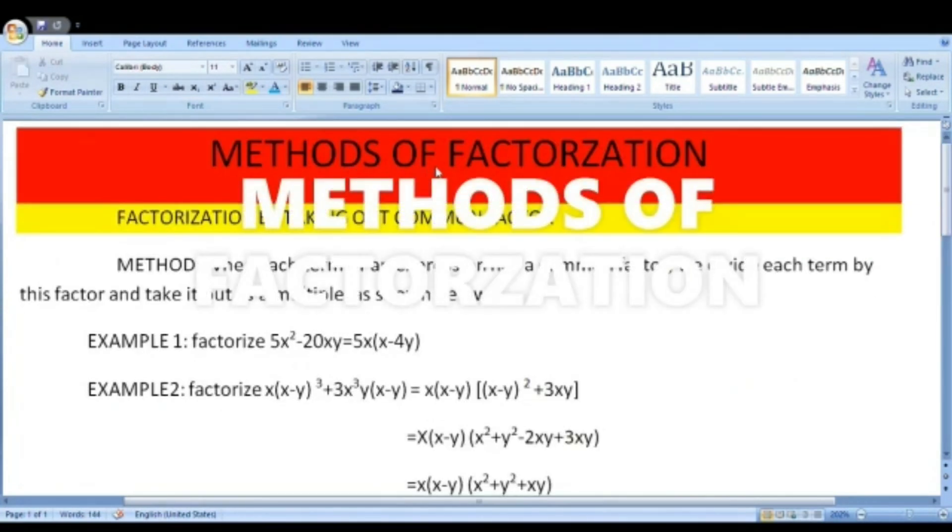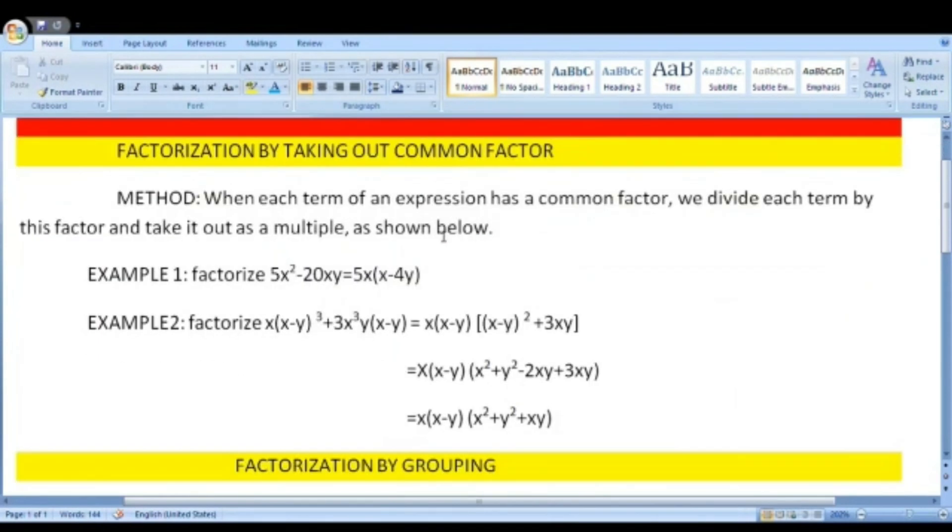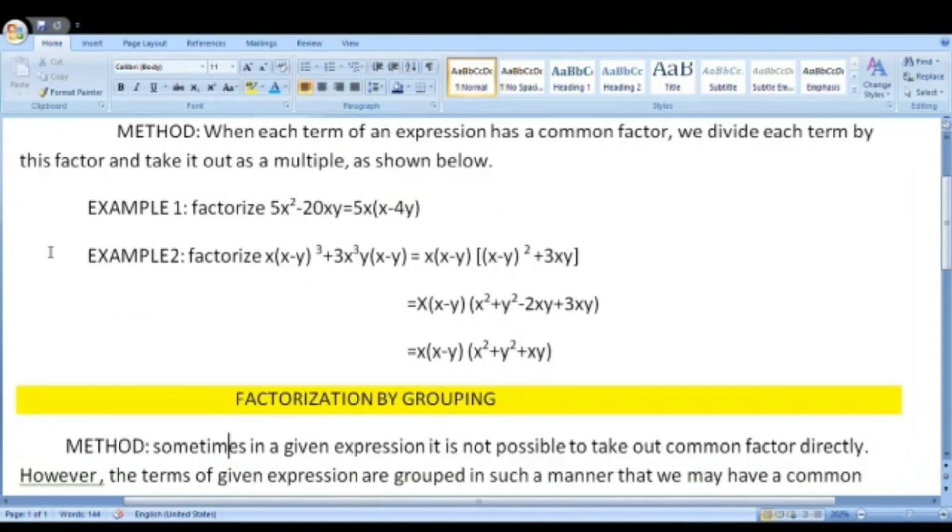Methods of Factorization. Factorization by taking a common factor. This is a very easy method. When each term of an expression has a common factor, we divide each term by this factor and take it out as a multiple as shown below. Example: factorize 5x² - 20xy = 5x(x - 4y).